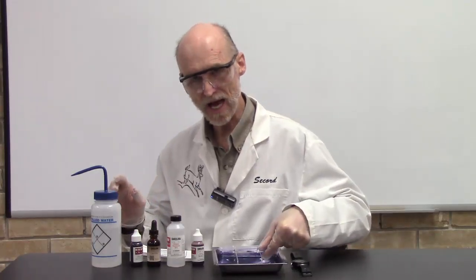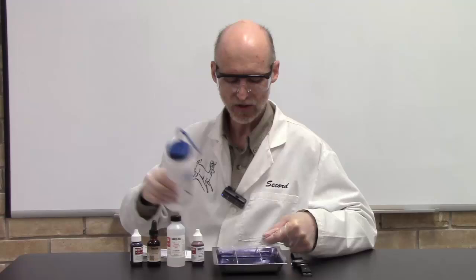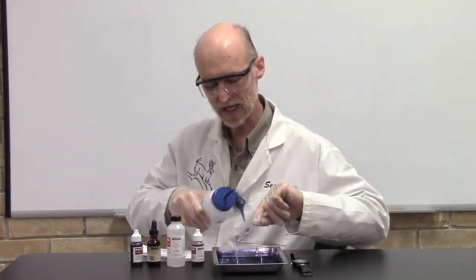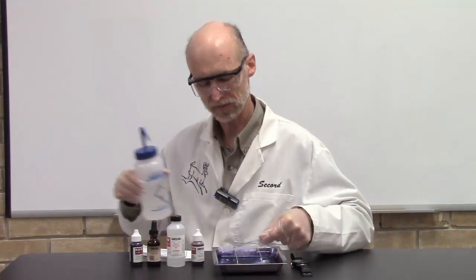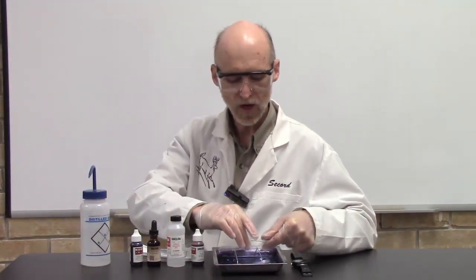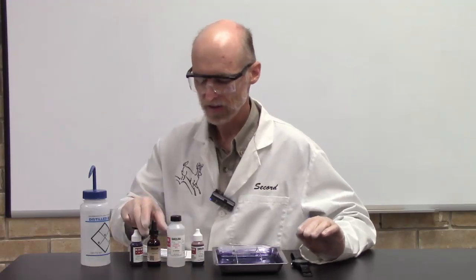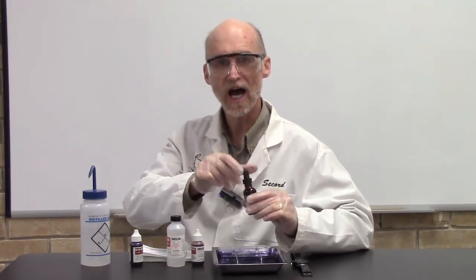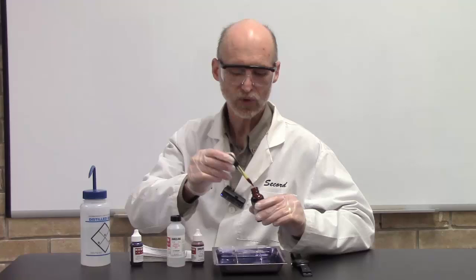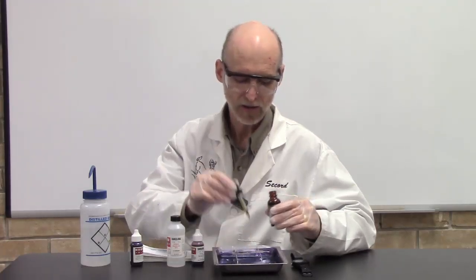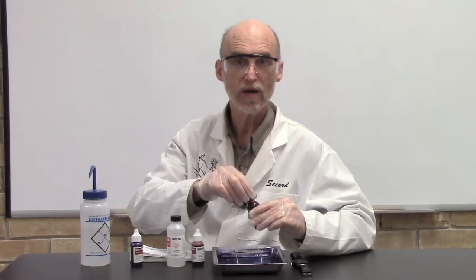After one minute has passed, you rinse the crystal violet off and I always rinse both sides of the slide to make sure I get it all off. Now leave the water on, don't worry about blotting dry. You don't blot between steps—you only blot when you're completely done with the whole technique. I immediately move on to my iodine and apply a couple drops on top of the bacterial smear. I'll let that sit one minute also.